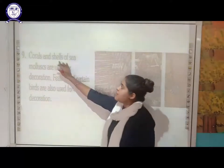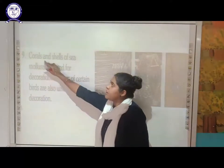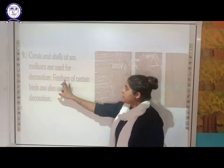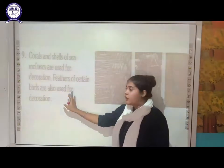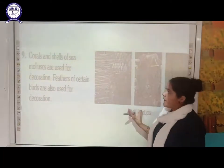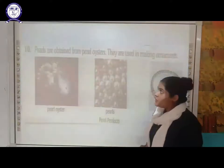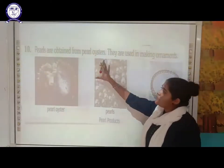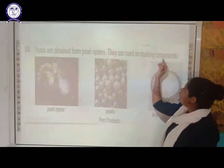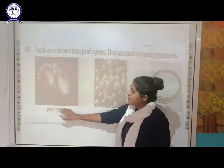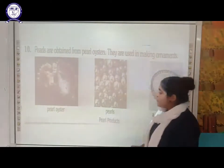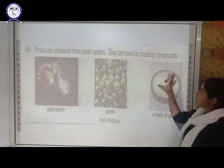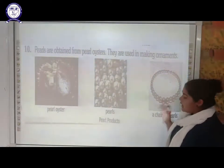The corals and shells of sea molluscs are used for decoration. The feathers of some birds are also used for decoration. The tenth useful product is pearls, which are obtained from the pearl oyster. As you can see in the diagram, the pearl oyster provides us pearls, and from these pearls we make a chain or other ornaments.